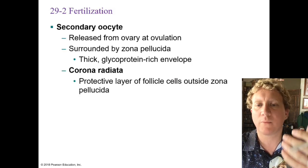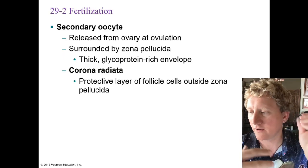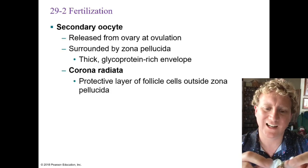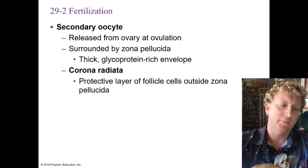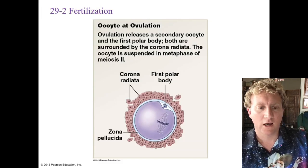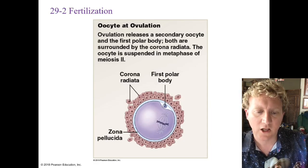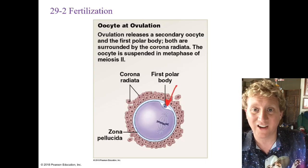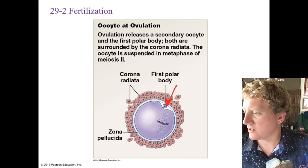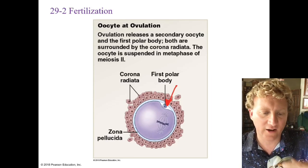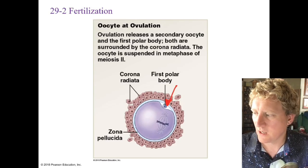The secondary oocyte is released from the ovary. It's surrounded by the zona pellucida — an envelope of glycoproteins — and around that is the corona radiata, a protective layer of cells. The zona pellucida separates the oocyte from the corona radiata. Once the oocyte is released, you have the first polar body, which won't develop into a future human. Spindle fibers begin forming in preparation for the continuation of meiosis, which hasn't completed yet because fertilization must take place first.